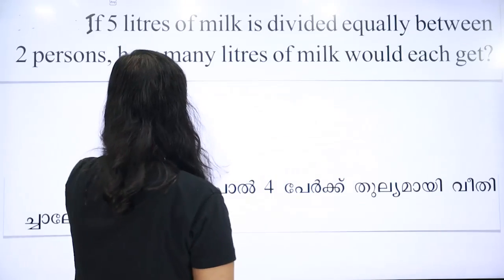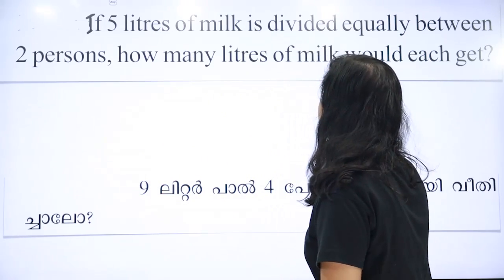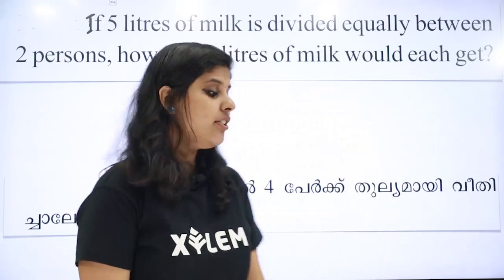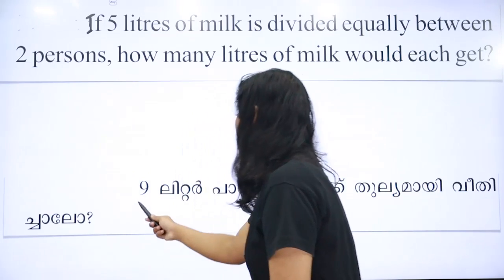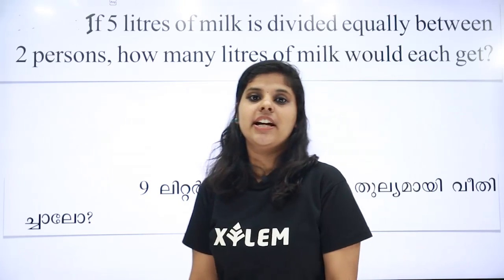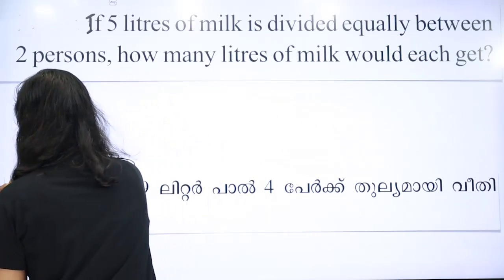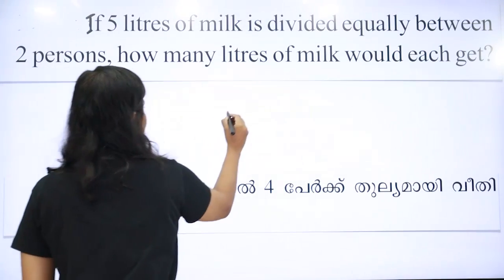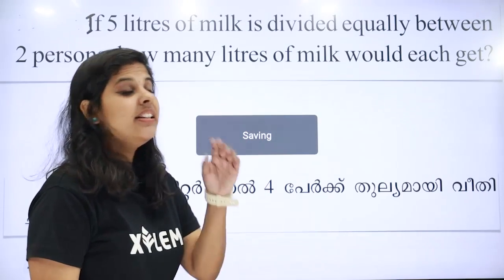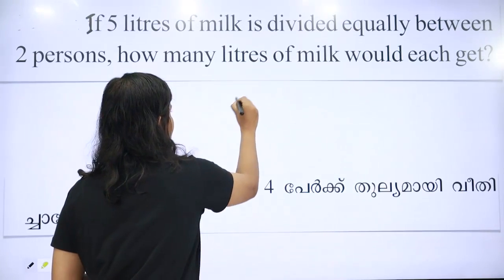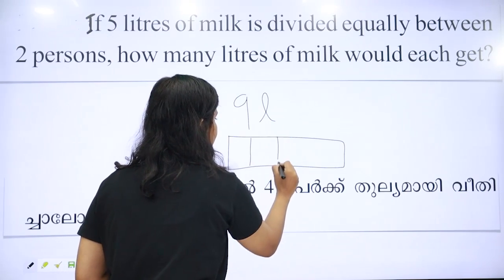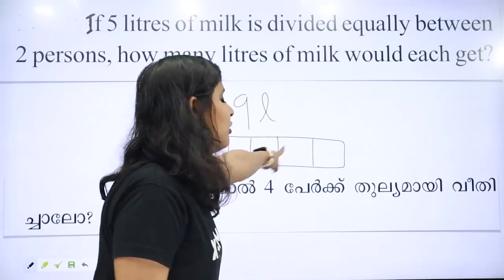How do you do the fraction? That's the question. If five liters of milk is divided equally between two, how many liters of milk would each get? How do you divide the fraction? You have 9 liters of milk in your hand. If you divide this into 4 equal parts — 1, 2, 3, 4 — we divide the fraction of 9 liters into 4 pieces.